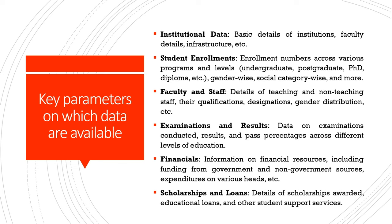AISHE also provides data on examinations and results, including pass percentages across different levels of education. There is information on financial resources including funding from government and non-government sources, expenditure on various heads, as well as information on scholarships and loans. For a researcher focused on the amount of scholarships and loans available to students in higher education, this could be an important area of research using the AISHE data.